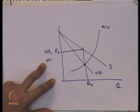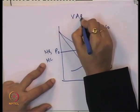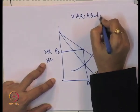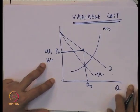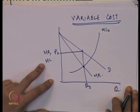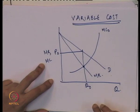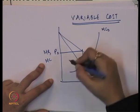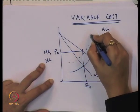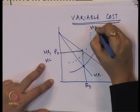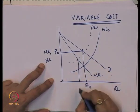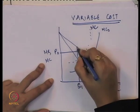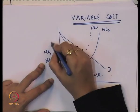Here we are studying the impact of variable cost — what happens to the equilibrium output and equilibrium price when there is an increase or decrease in variable cost. If there is an increase in variable cost, the marginal cost shifts to the left to MC1, and corresponding to MC1 we get a new level of output Q1 and a new level of price P1.